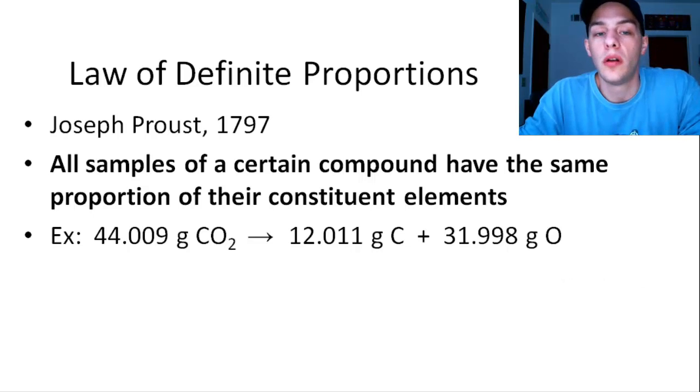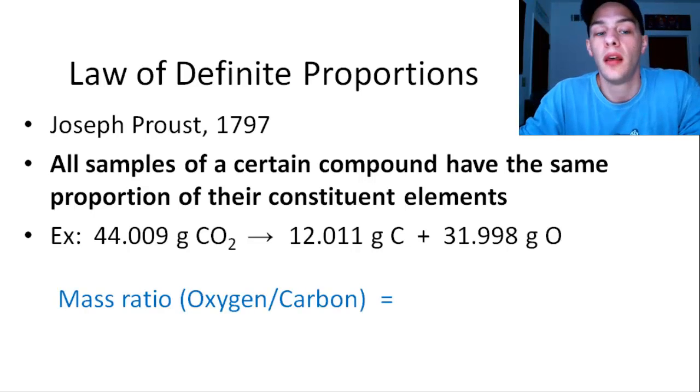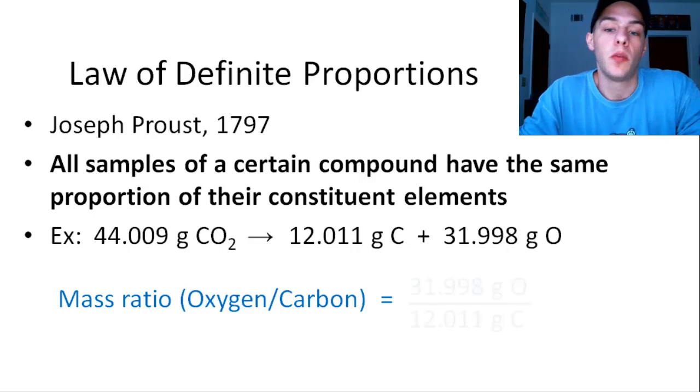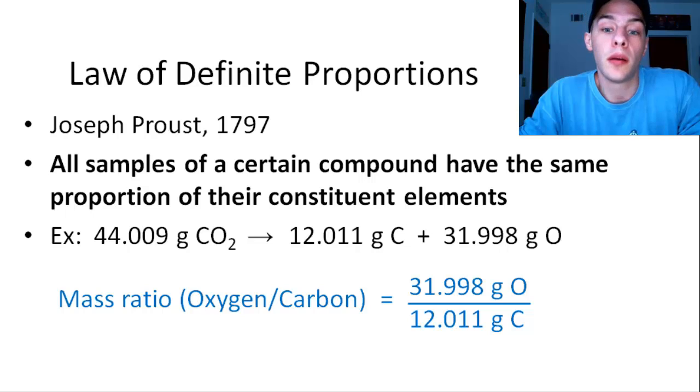So the idea with the Law of Definite Proportions is, if I take the ratio of those two masses, so if I take the mass ratio of oxygen to carbon, for instance, that'll be the 31.998 grams over the 12.011 grams. That ratio is going to end up being 2.6641.